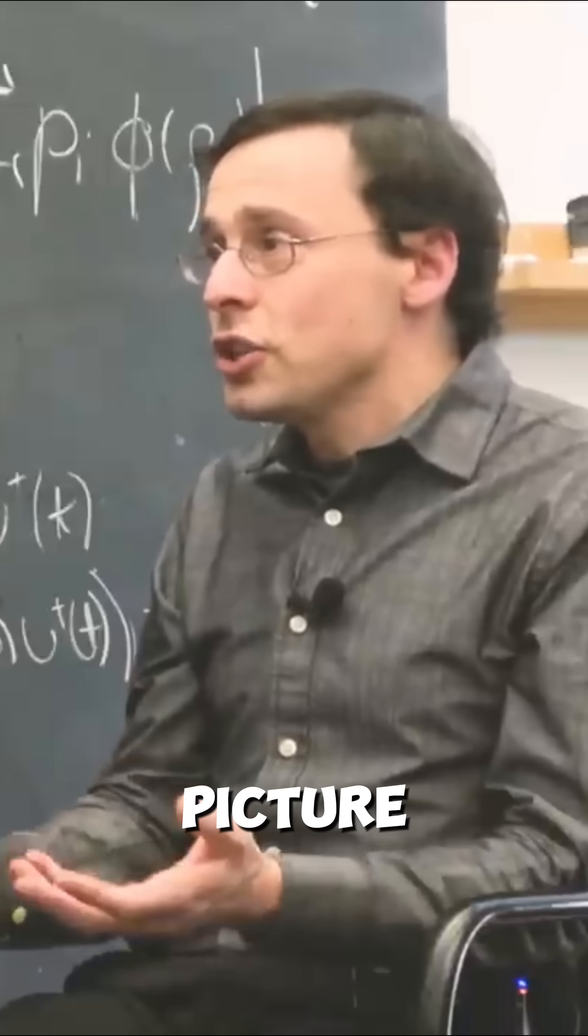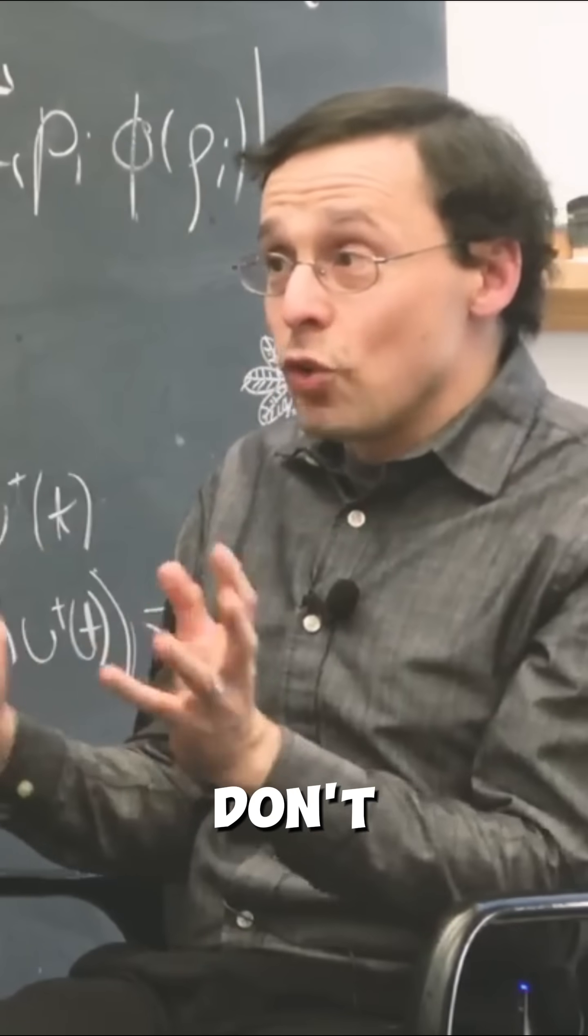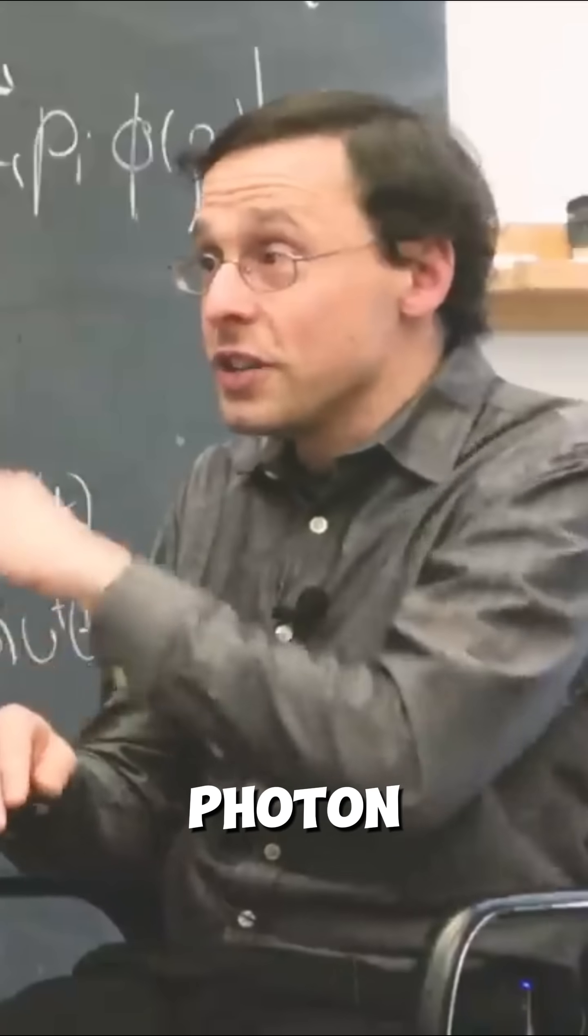They're like, but where's the picture? And isn't it like there's an electron and it emits a photon? And I'm like, well, the textbook axioms don't really talk about an electron here emitting a photon there.